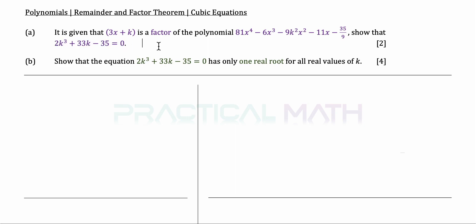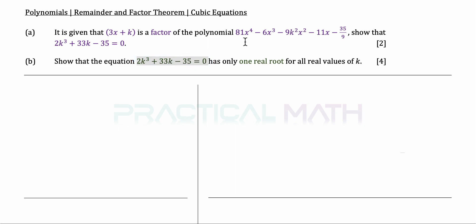That's a 2-mark question. And in part b of the question, we are to show that the equation 2k cubed plus 33k minus 35 equals 0 has only one real root for all real values of k.